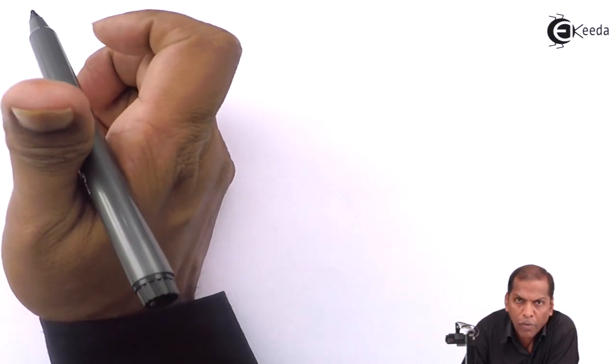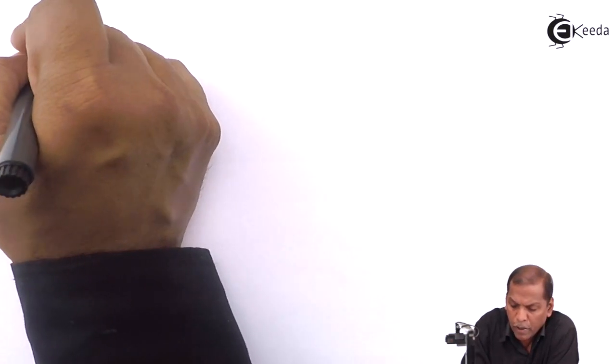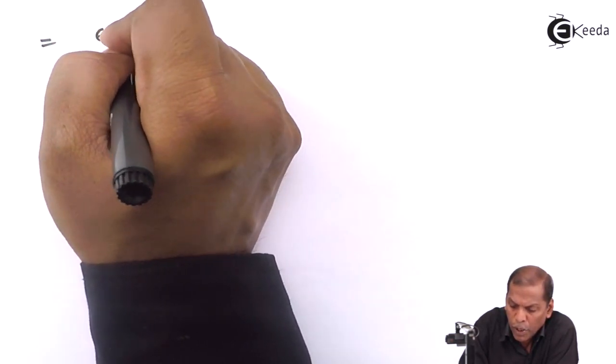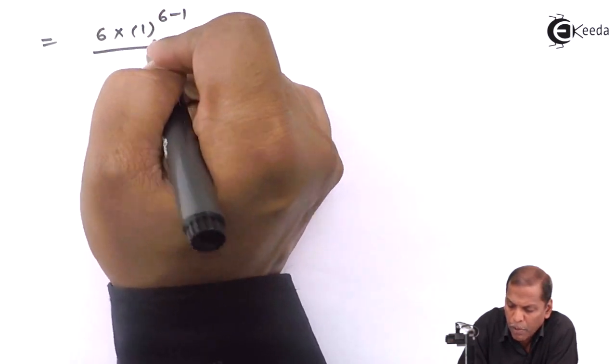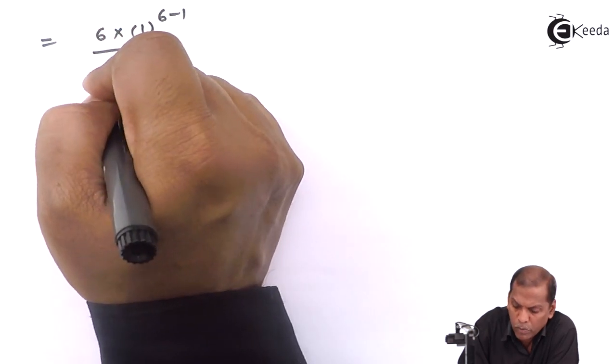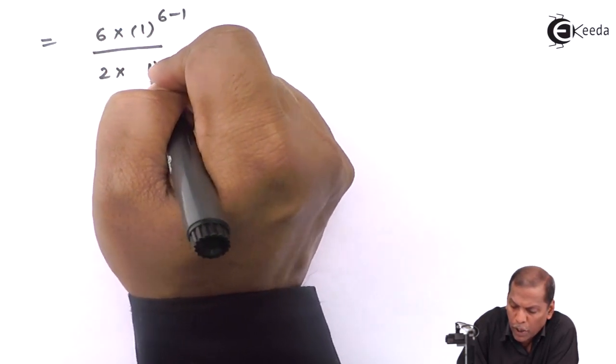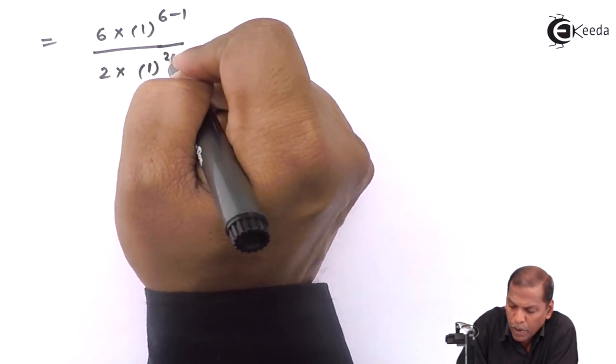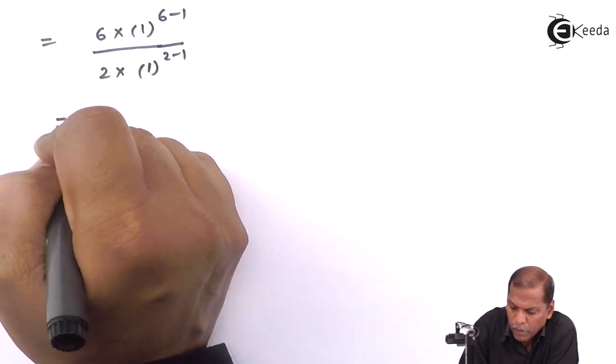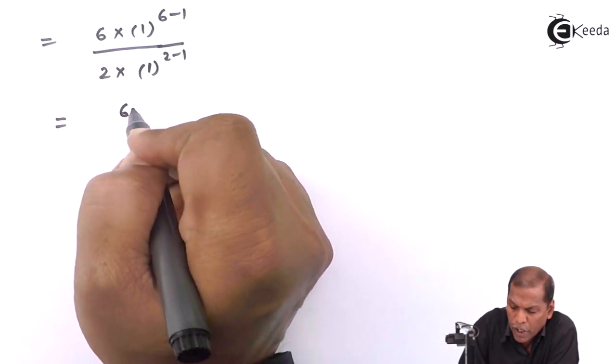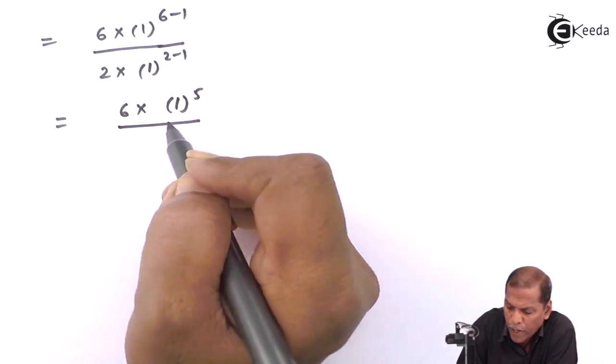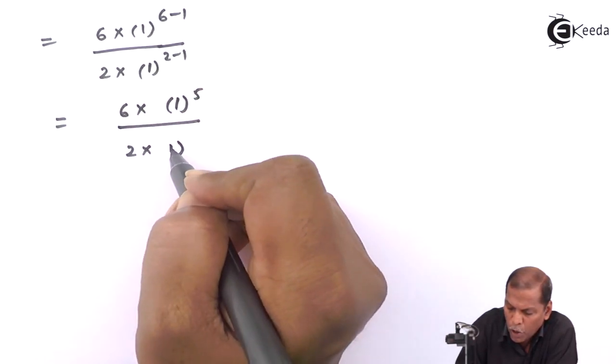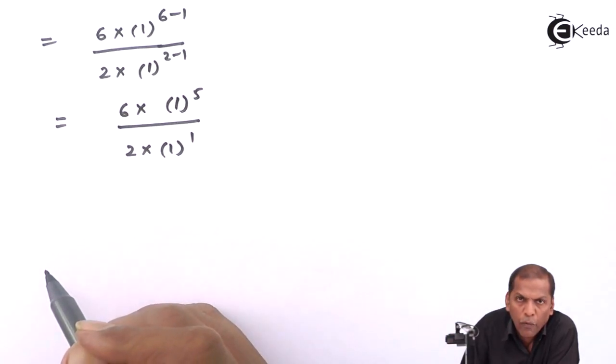Now, by applying our formula, we get 6 times 1^(6-1) over 2 times 1^(2-1). So that equals 6 times 1^5 over 2 times 1^1.